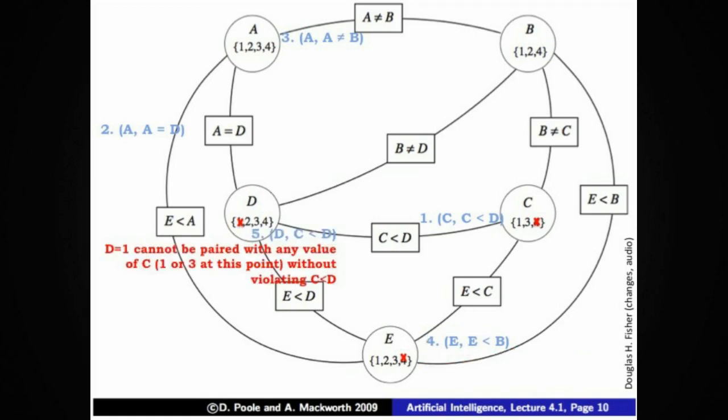For the constraint c is less than d and its implications on variable d, d equals 1 has no corresponding values in c. At this point, the domain of c is 1 and 3, assuming earlier constraints have been handled. Since c cannot be properly less than 1, the value 1 is impossible as a value for d and is removed. In total, for the five constraints we've looked at so far, these are the three values we would have removed.